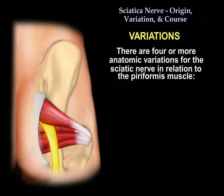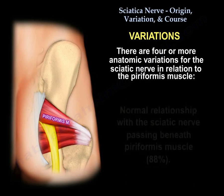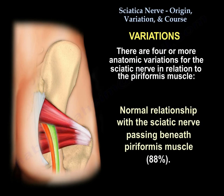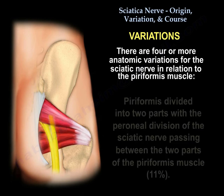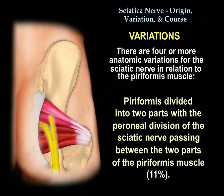There are four or more variation patterns identified regarding the sciatic nerve and the piriformis muscle. In the majority of patients — about 88% — the sciatic nerve passes underneath the piriformis muscle. In another pattern, seen in about 11% of cases, the piriformis is divided into two parts, with the peroneal division of the sciatic nerve passing between the two parts of the piriformis muscle.